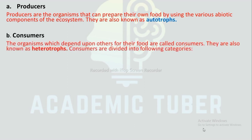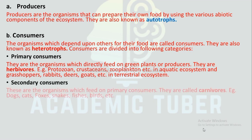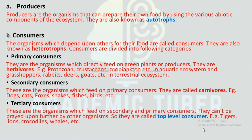Consumers: Organisms which depend upon others for their food are called consumers; they are also known as heterotrophs. Primary consumers are organisms which directly feed on green plants or producers; they are herbivores — examples include protozoa, crustaceans, zooplankton in aquatic ecosystems, and grasshoppers, rabbits, deer, goats in terrestrial ecosystems. Secondary consumers feed on primary consumers and are called carnivores — examples include dogs, cats, foxes, snakes, frogs, and birds.